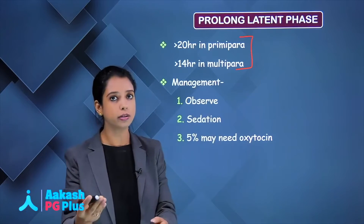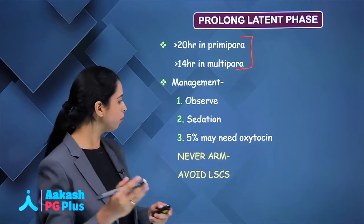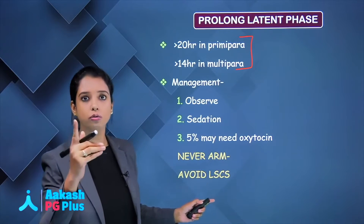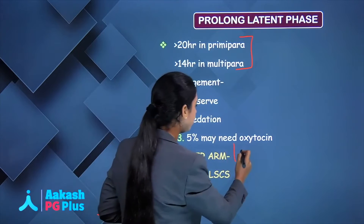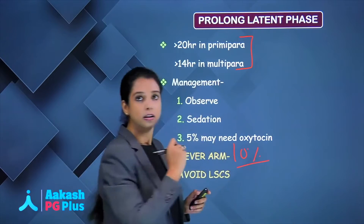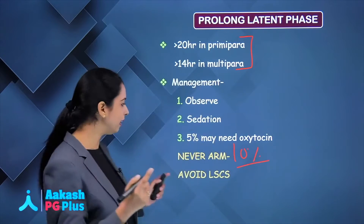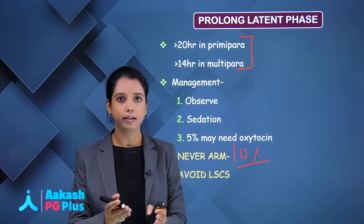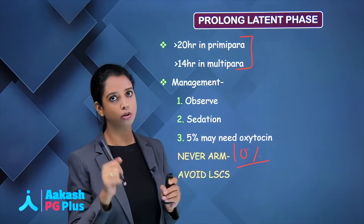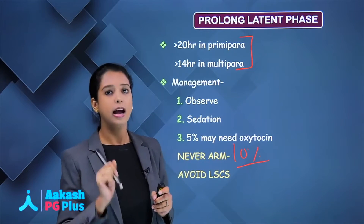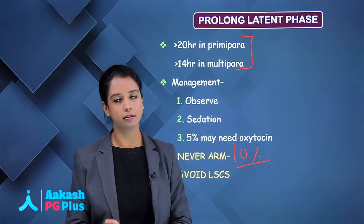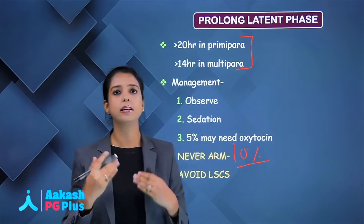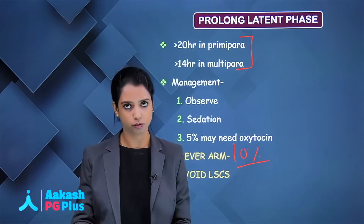What you cannot do in prolonged latent phase: never do ARM. Because 10% were in false labour, so you would not want to rupture the membrane of a patient in false labour. Also, prefer not doing LSCS for prolonged latent phase — LSCS should not be a choice.